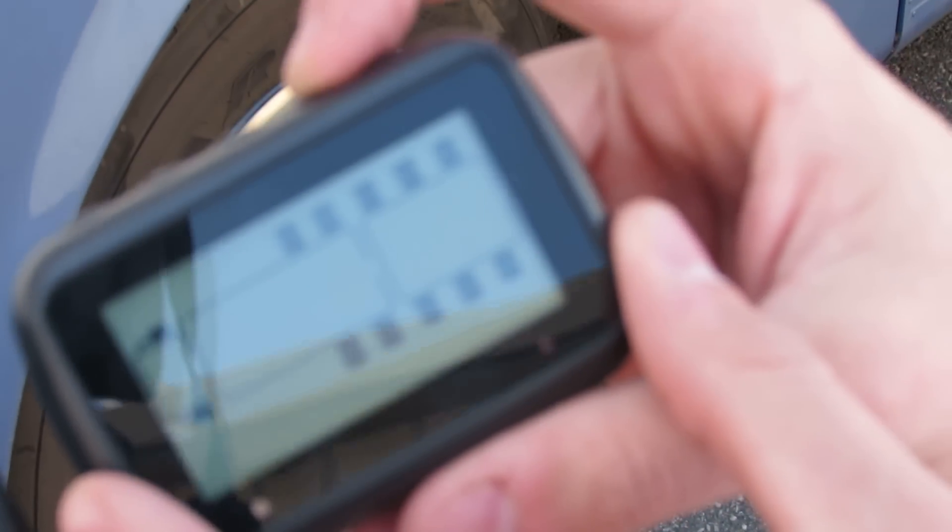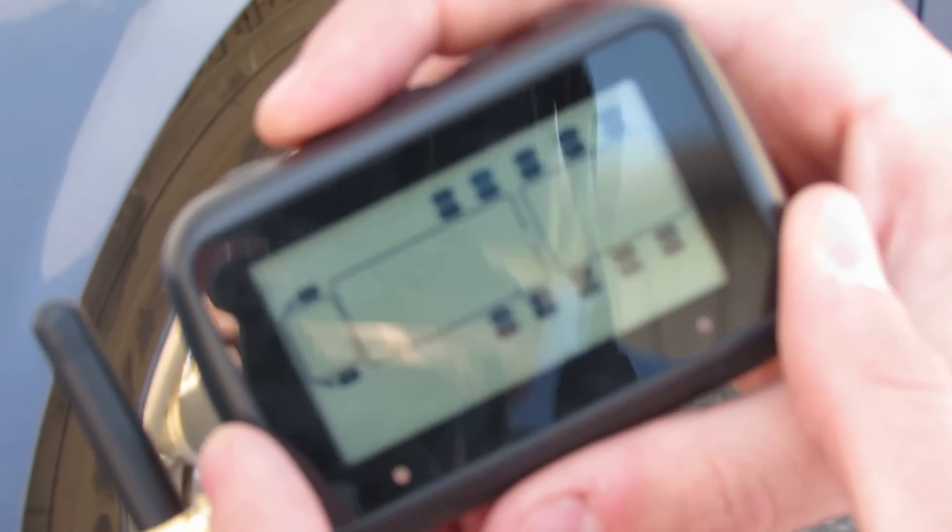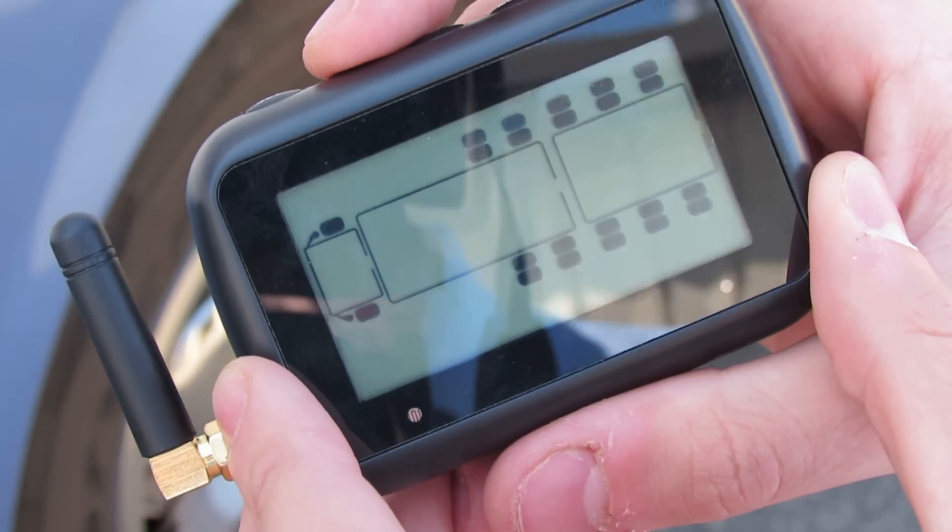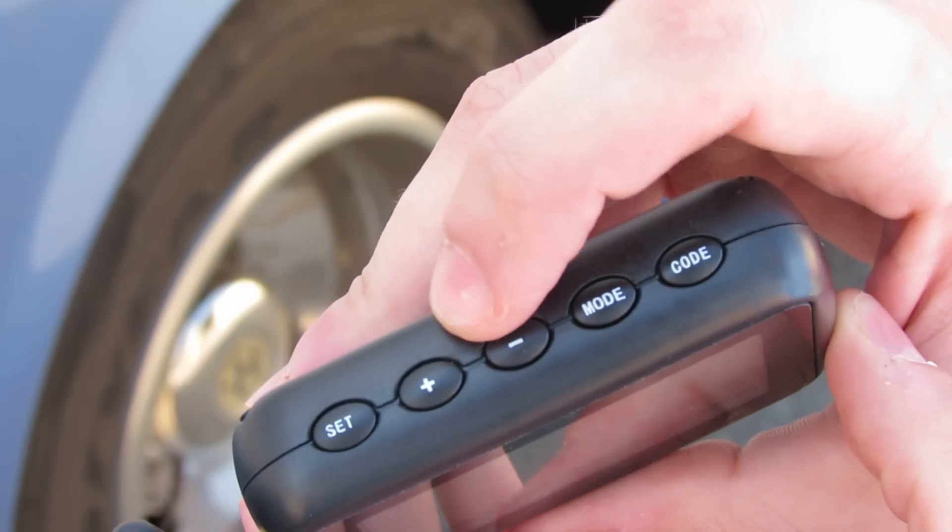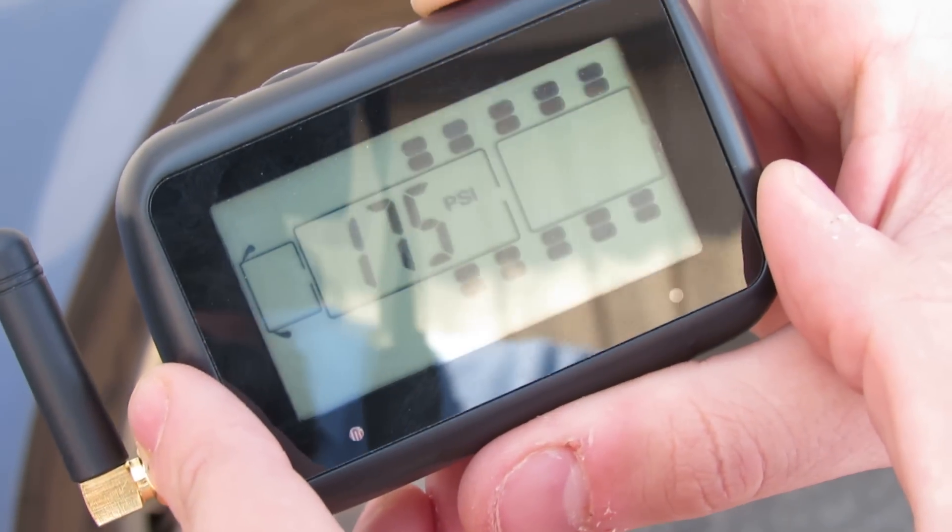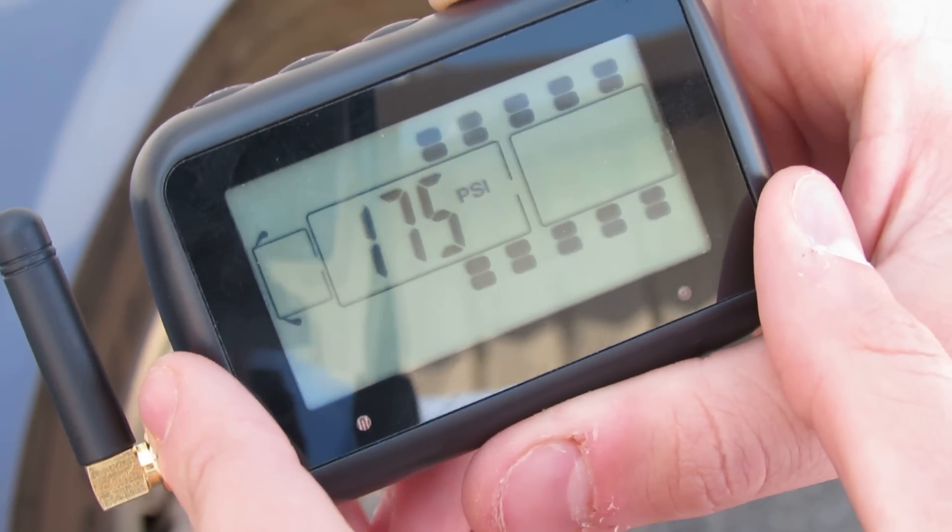You will come to a screen where it is flashing PSI. Press mode. You will see Celsius on your screen. You will want it changed to Fahrenheit by pressing the plus button. Once changed to Fahrenheit, you will go on to your steer axle.